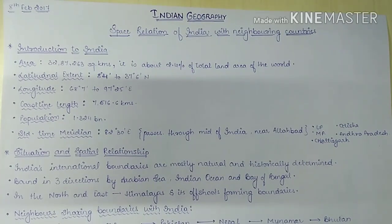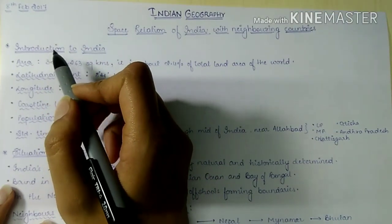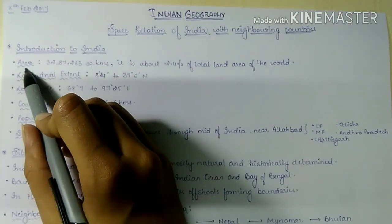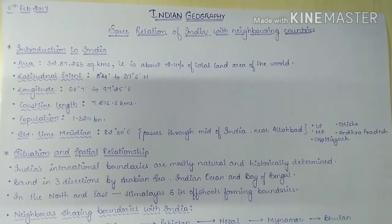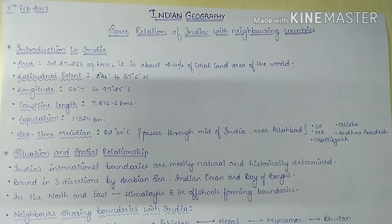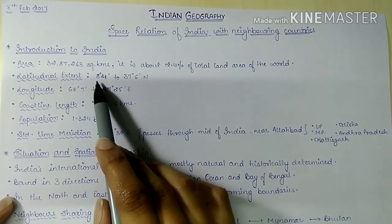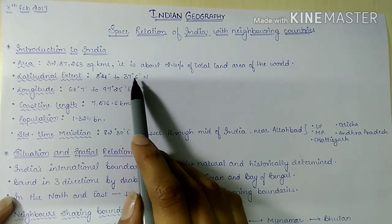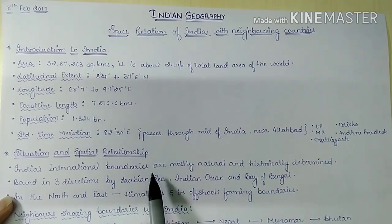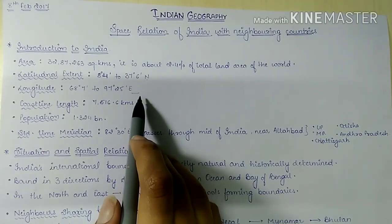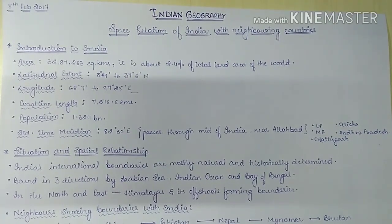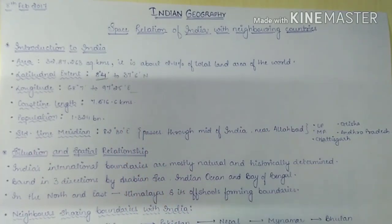Let us start with a basic introduction of India. The area of India is about 2.4% of the total land area of the world, that is 32,87,263 square kilometers. The latitudinal extent of India is from 8 degrees 4 minutes to 37 degrees 6 minutes north, and the longitudinal extent is from 68 degrees 7 minutes to 97 degrees 25 minutes east. Its basic latitudinal and longitudinal extent is about 30 degrees. This was about the mainland.